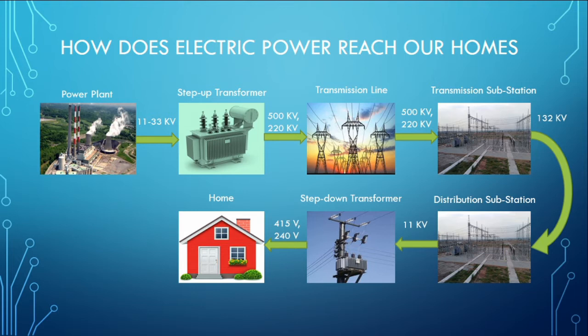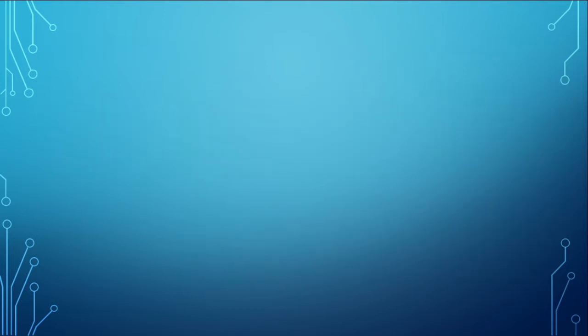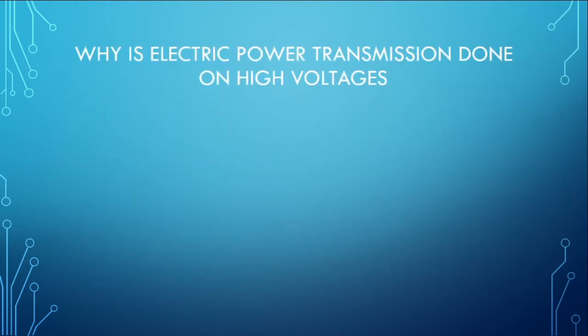415 V is the phase voltage — that is the voltage difference between any two phases — whereas 240 V is the line voltage, that is the voltage between any phase and the neutral. Now, why is electric power transmission carried out on high voltages? Here are the main reasons behind this.